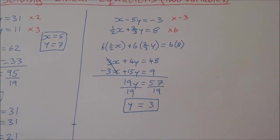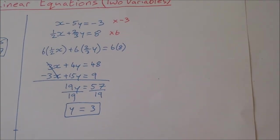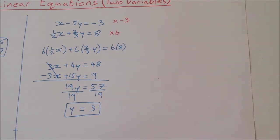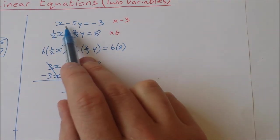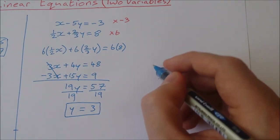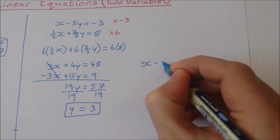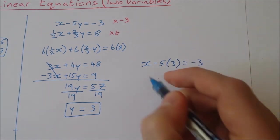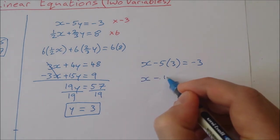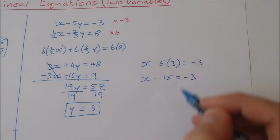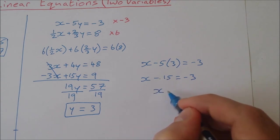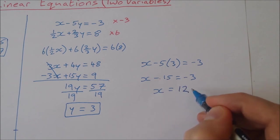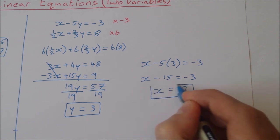Now that I've found y, I need to find x. I'll substitute y equals 3 into the very first equation because it already has a single x on its own. That gives x minus 5 times 3 equals minus 3, so x minus 15 equals minus 3. Adding 15 to both sides: x equals minus 3 plus 15, which is 12.